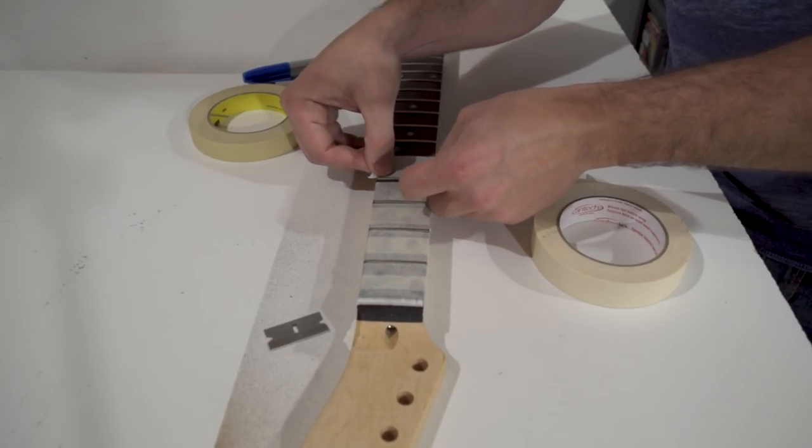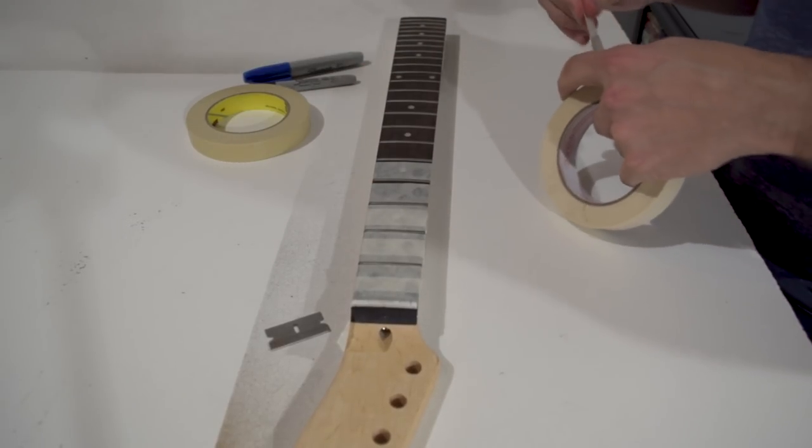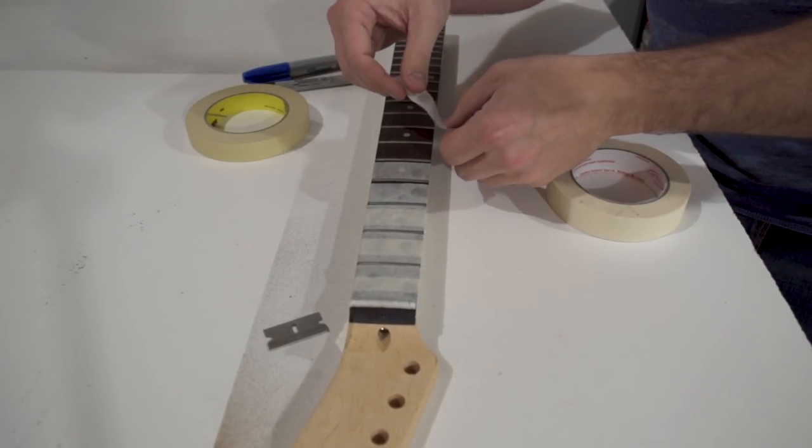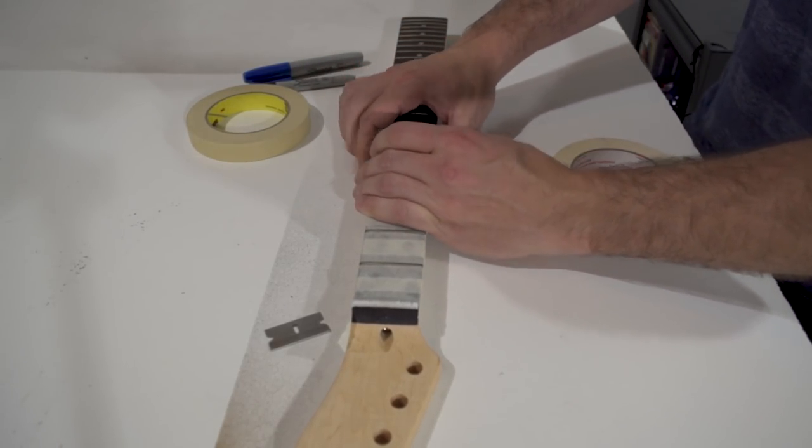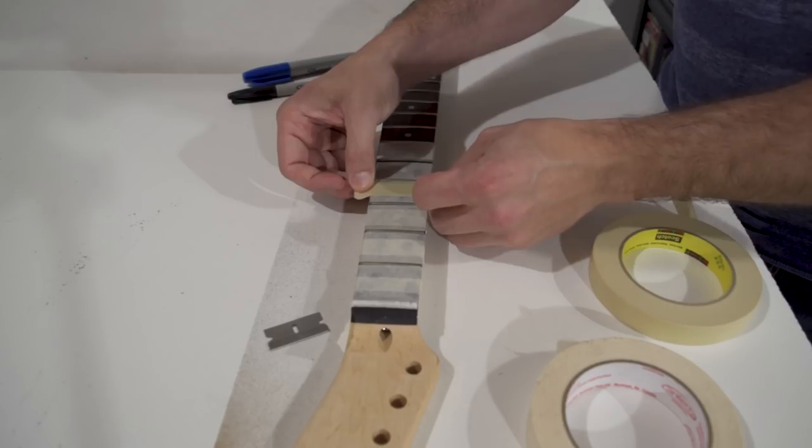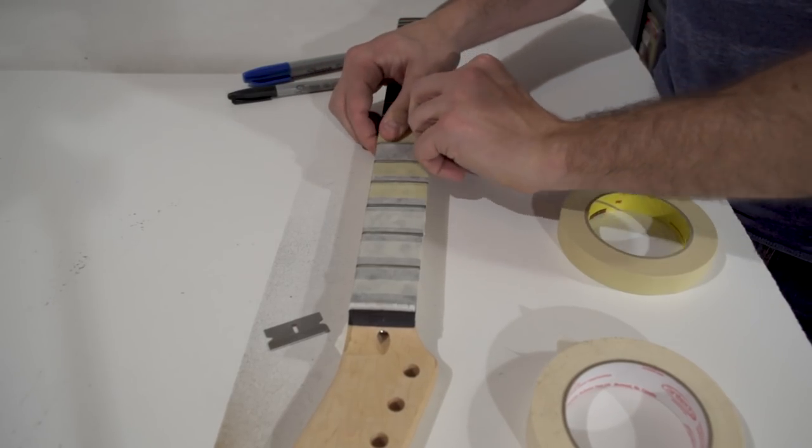I start with my thicker tape. I make my way down the board here at the top. It takes two pieces. When I get down further, it's only going to take one. Then I move to my thinner stuff and eventually we get to the point where even the thinner tape doesn't fit between the frets. That's why we've got a razor blade.